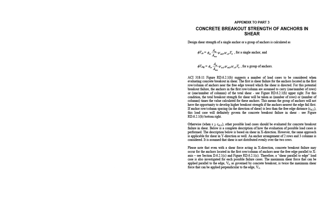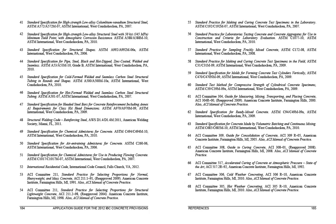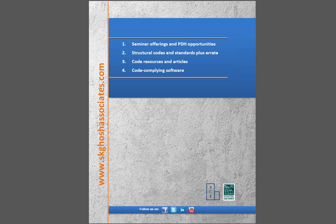Finally, the appendix to Part 3 of the book captures a topic that has created confusion and difficulties for code users. This appendix explains different cases of concrete breakout failure of anchors in shear based on Appendix D of ACI 318. This book is a must-have for all code users dealing with concrete structures and will hopefully be a place to go to find answers to your questions. Thank you for your interest.